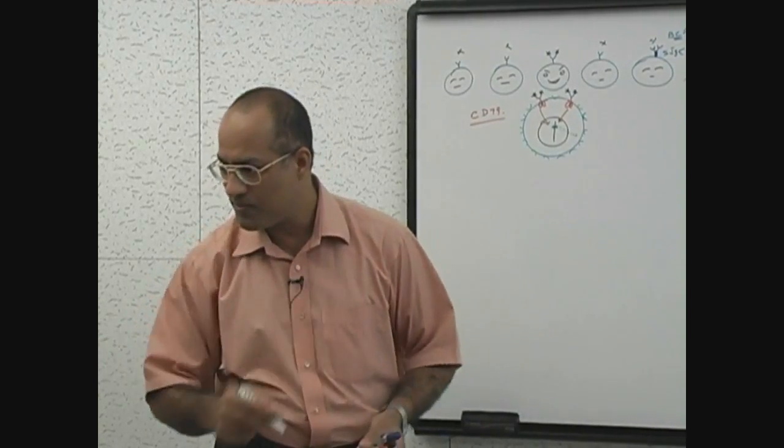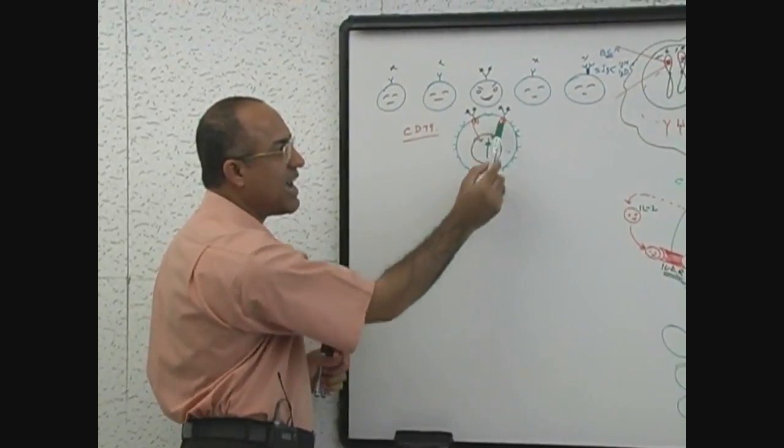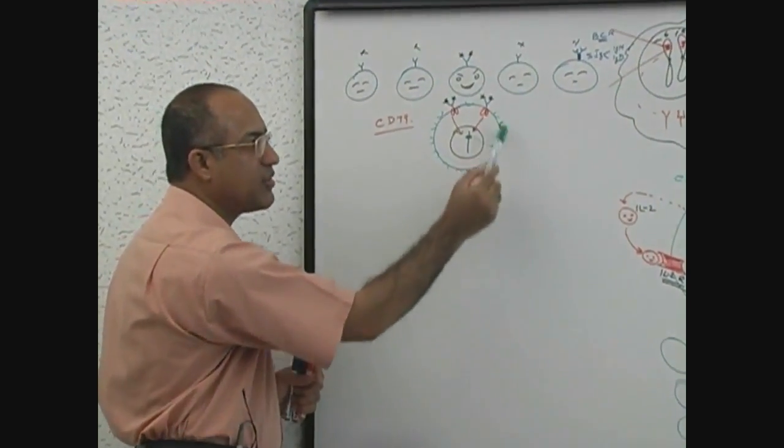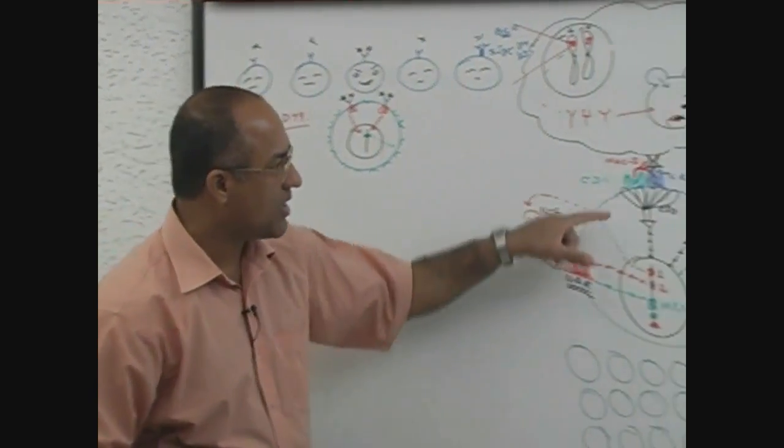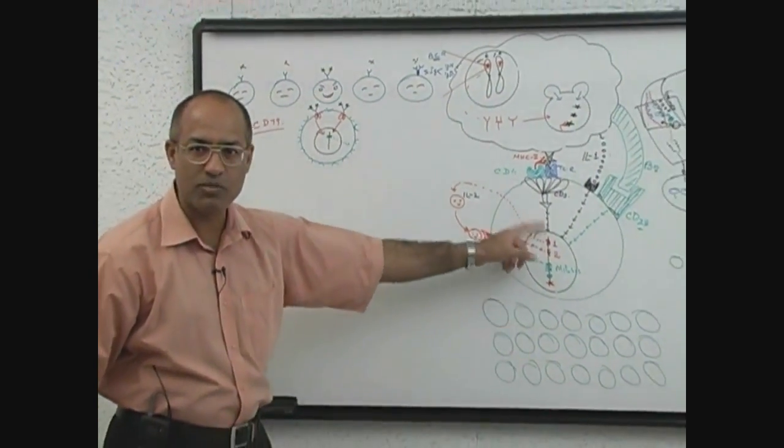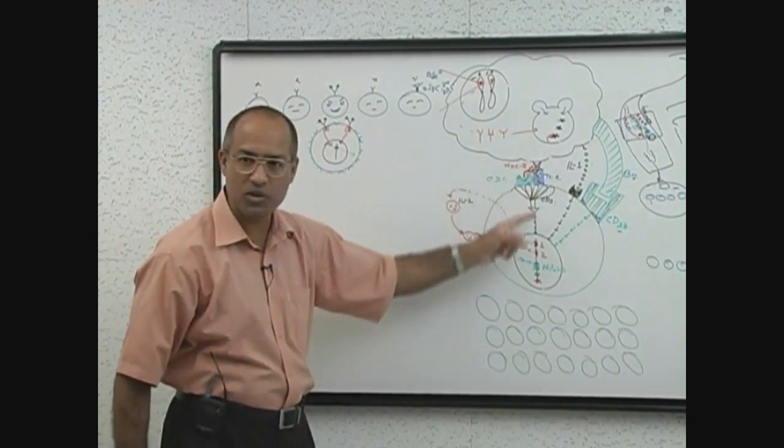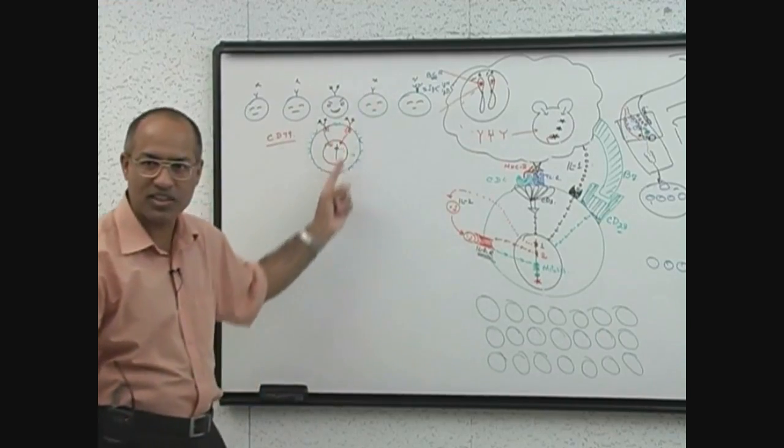Who is there? Let me tell you. While this B cell is selected and it expresses its surface with special type of receptors, meanwhile this has undergone enough clonal expansion. Let's link the story number 1 and 2. This is occurring in the same lymph node. There were T cell stimulation and there is also B cell stimulation.